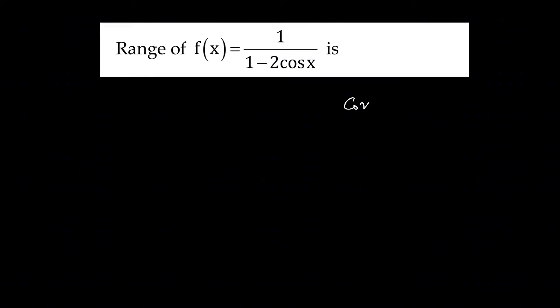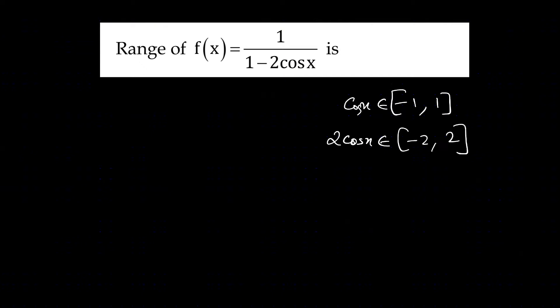Consider 1 by 1 minus 2cos x. Cos x lies between what and what? Minus 1 to 1. So 2cos x lies between what and what? Minus 2 and 2.